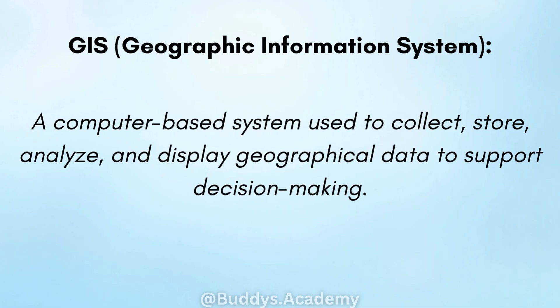GIS — Geographic Information System. This is a computer-based system that is used to collect, store, analyze and display geographical data to support decision making. It is very important that you include these four keywords, as that is what your examiner will look for in your definition.